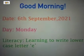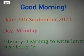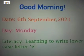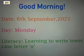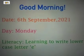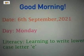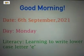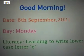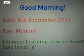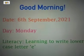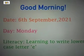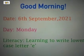Good morning children. Today's date is 6th September, the year is 2021. Today's day is Monday and in our literacy class we'll be learning how to write lowercase letter E.